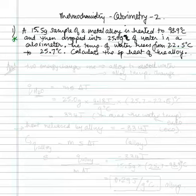A 15.5 gram sample of a metal alloy is heated to 98.9 degrees Celsius and then dropped into 25 grams of water in a calorimeter. The temperature of the water rises from 22.5 degrees Celsius to 25.7 degrees Celsius. Calculate the specific heat of the alloy.